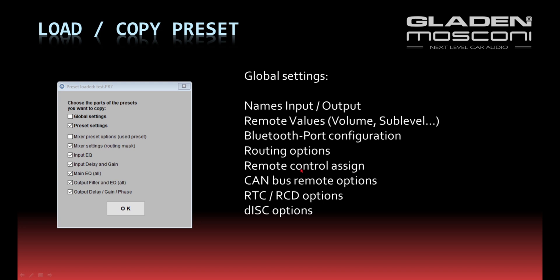This covers which output channels are controlled as sublevel, fader front, fader left, and so on. Also included are the CAN remote options — if you have an RC CAN or RC CAN Open connected, you have to choose different options. These options are stored in the global settings, including the RTC or RCD control input, output, or sublevel settings, and the control options from the dynamic input signal conditioner.